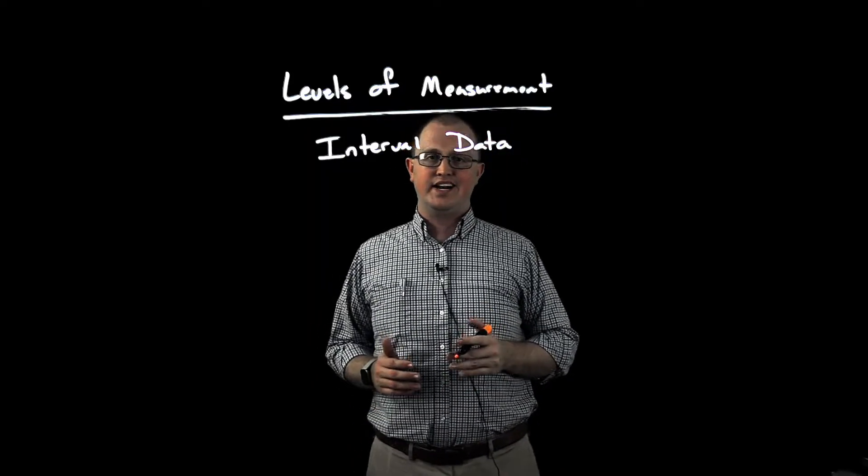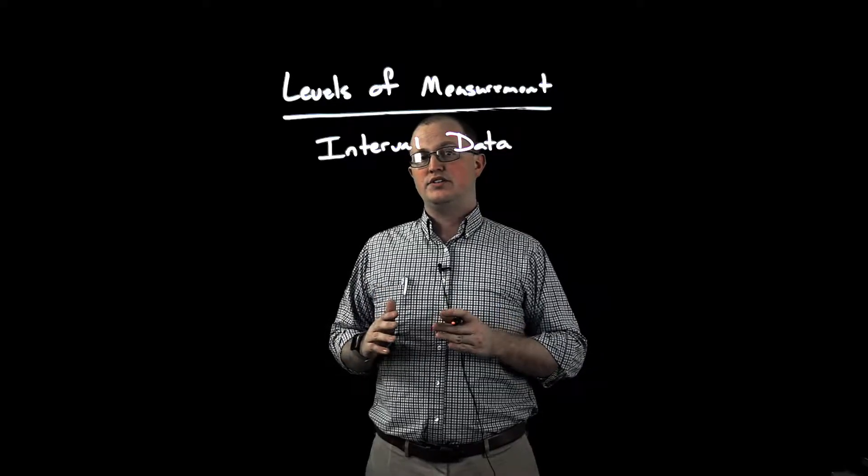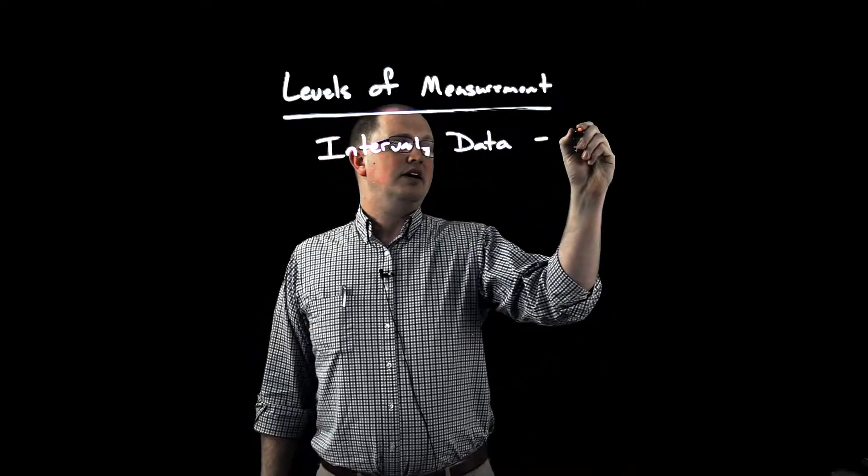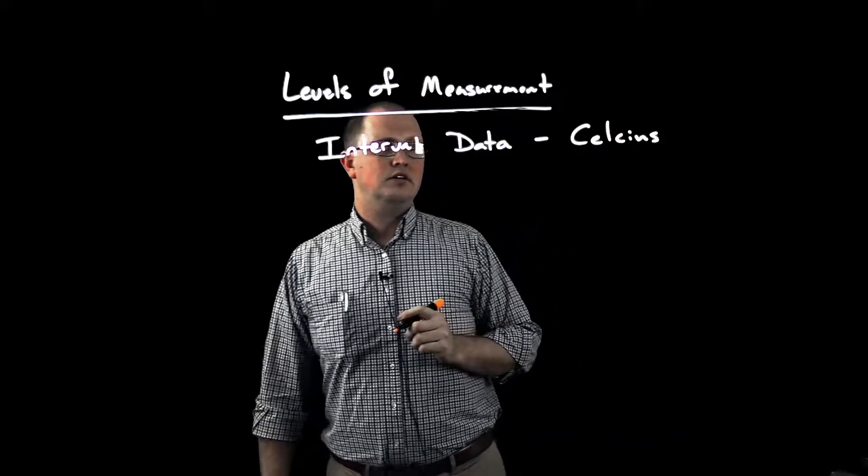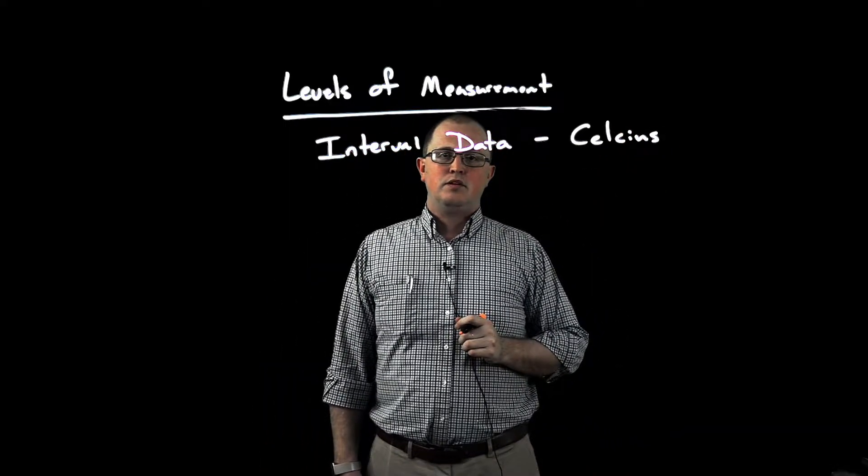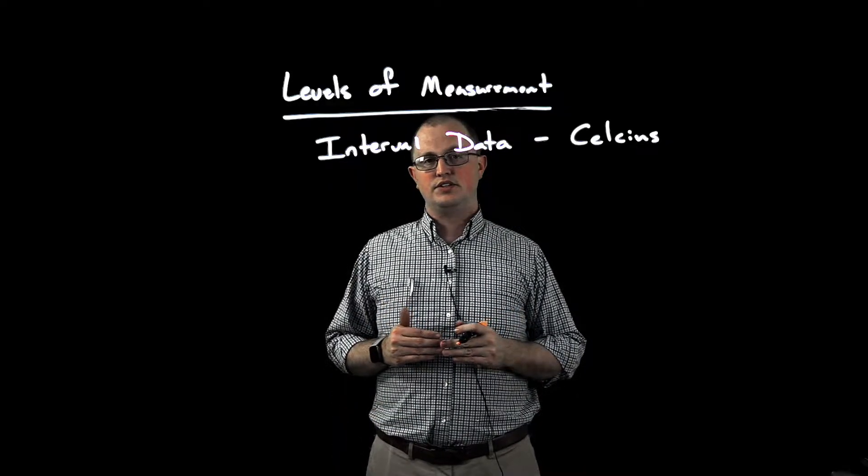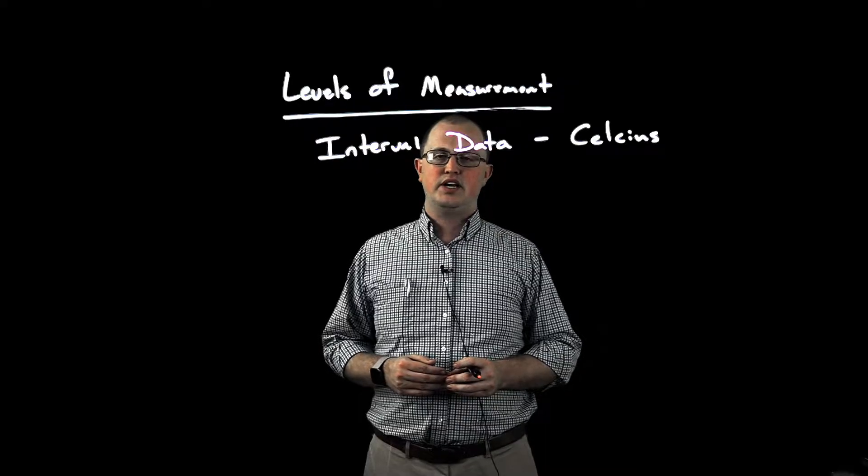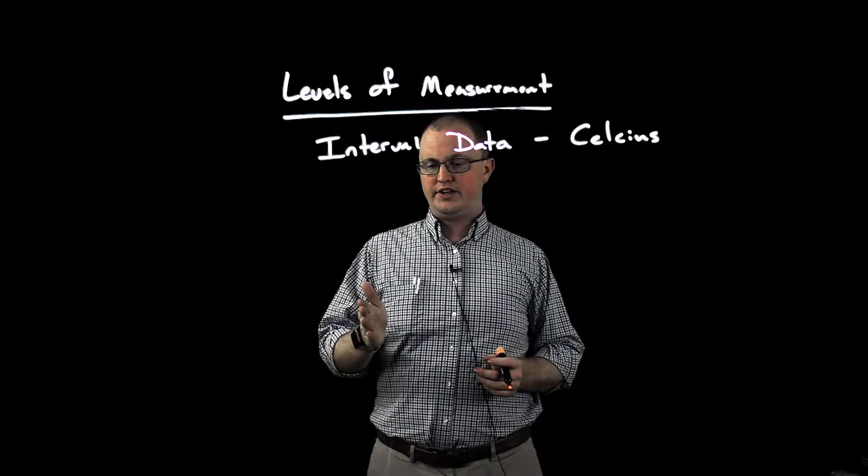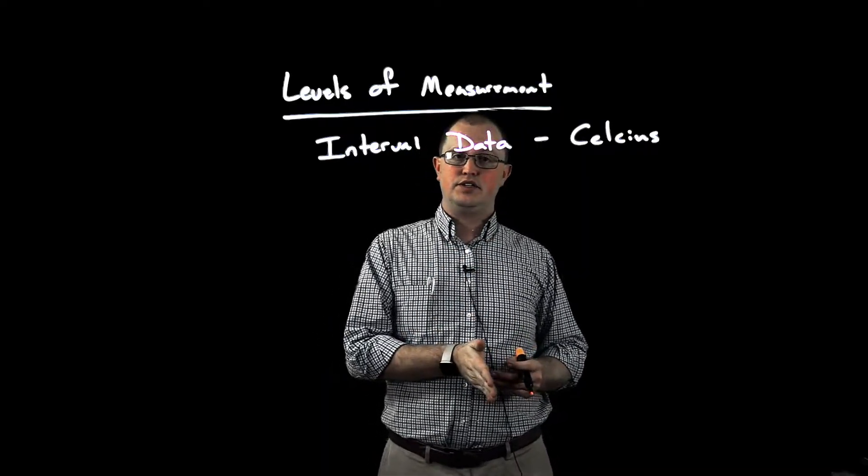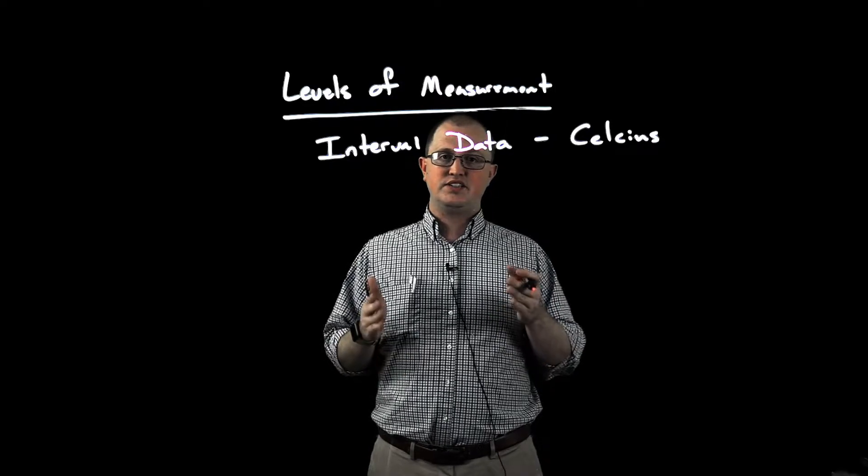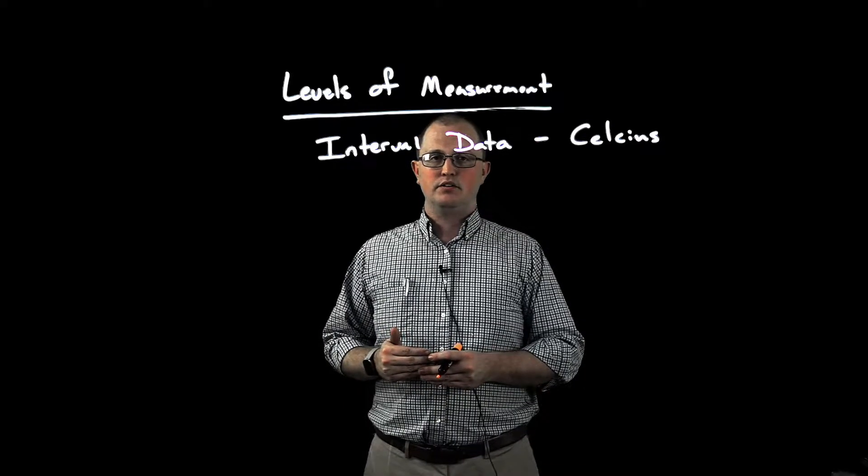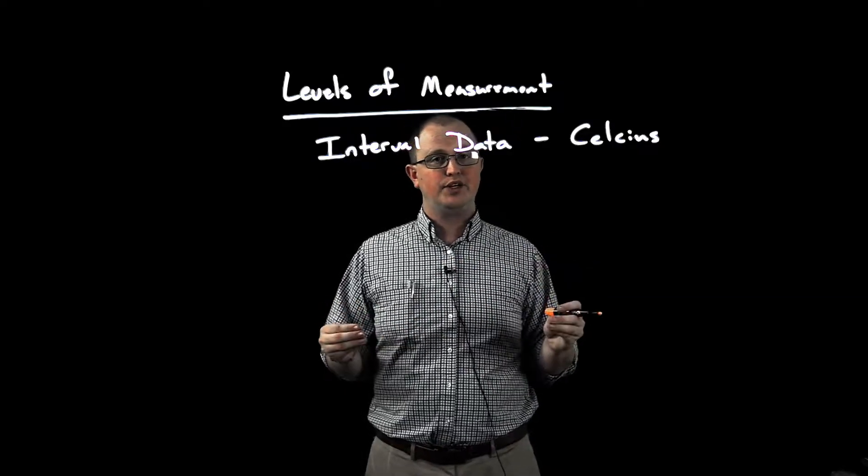Interval data is numeric data where we can measure the difference in one value to another. So for example, let's consider degrees Celsius. We know that whenever we're measuring degrees in Celsius, zero degrees is the freezing point of water and 100 degrees is the boiling point. And so if we say that we have something that's at 40 degrees Celsius and something that's at 50 degrees Celsius, we can say that the 50 degrees Celsius object is 10 degrees Celsius more than the 40 degrees Celsius object. So we have a very clear measurement in the difference between those two values.